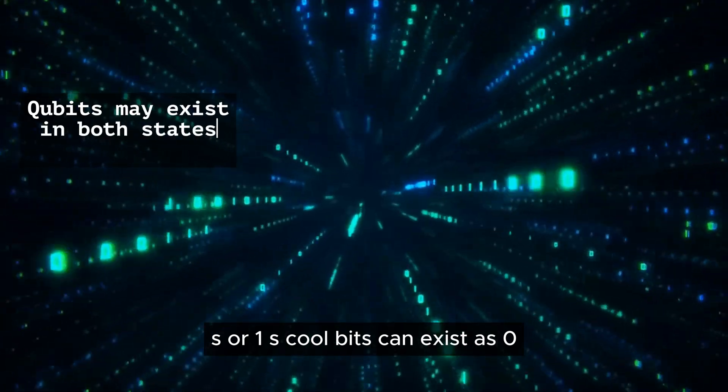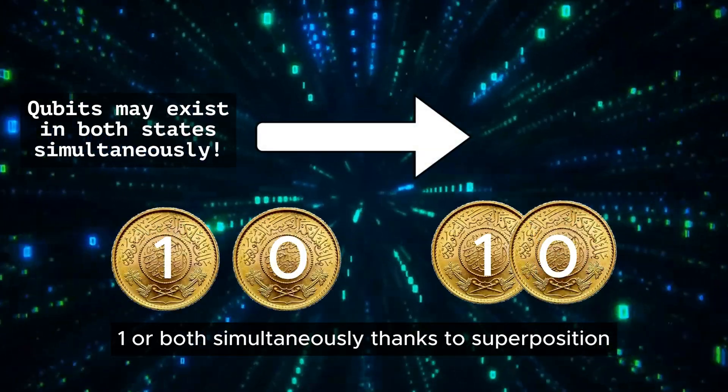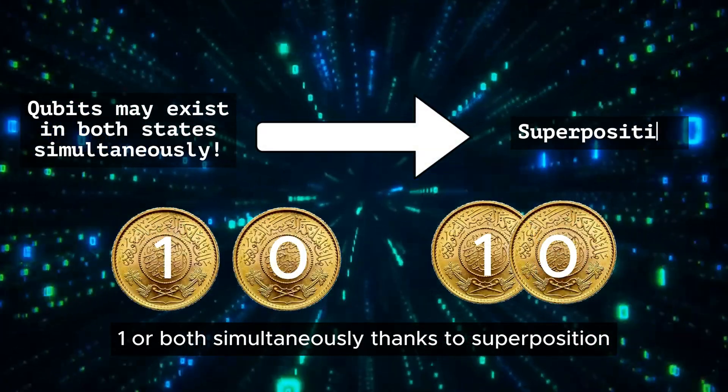Unlike classical bits that represent 0s or 1s, qubits can exist as 0, 1, or both simultaneously, thanks to superposition.